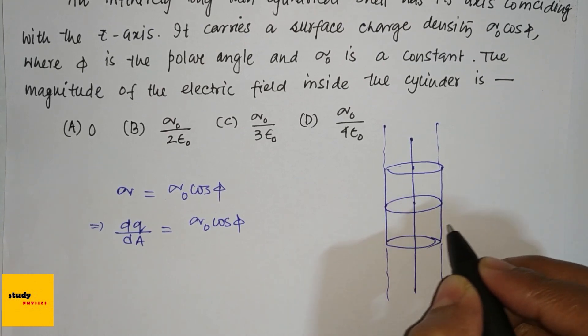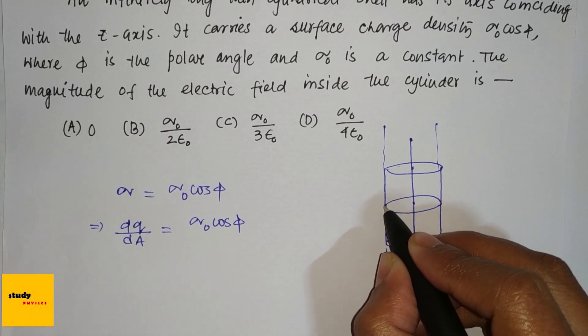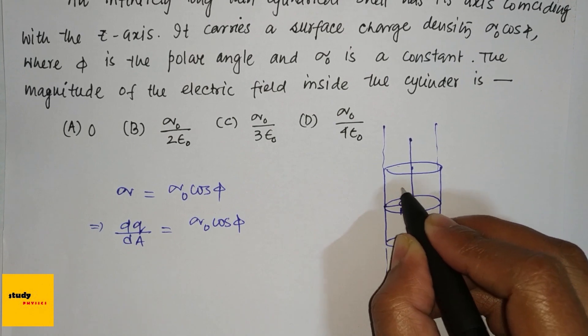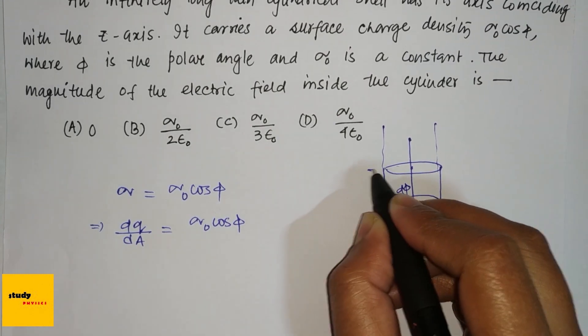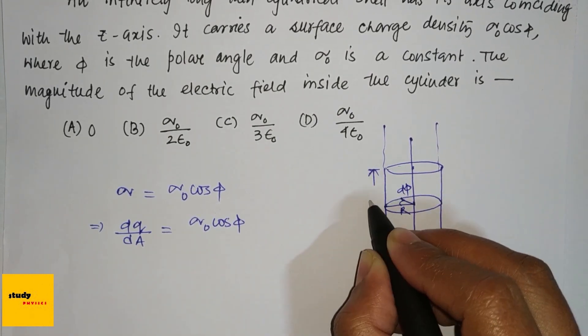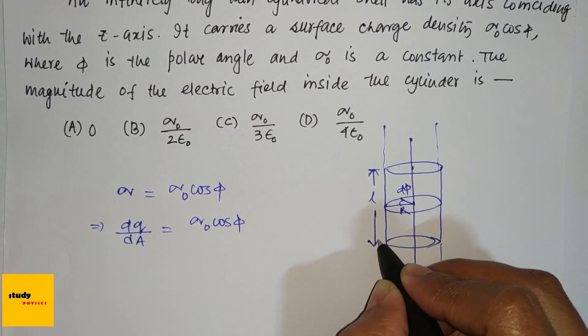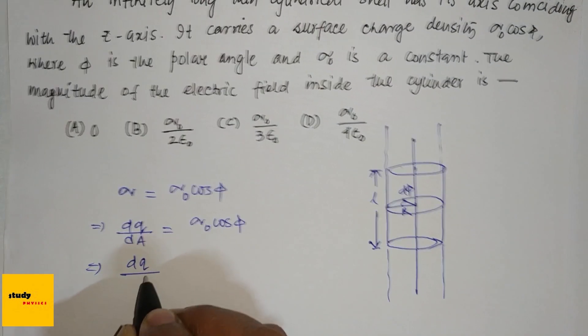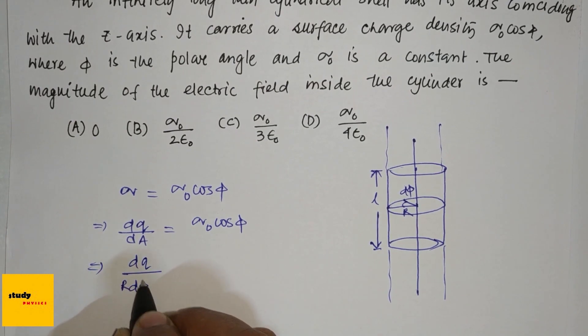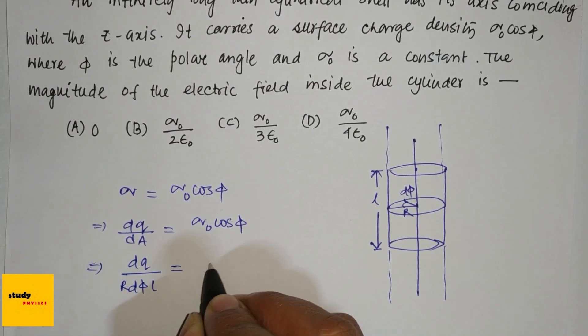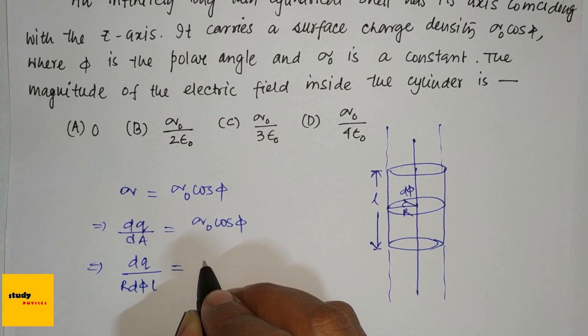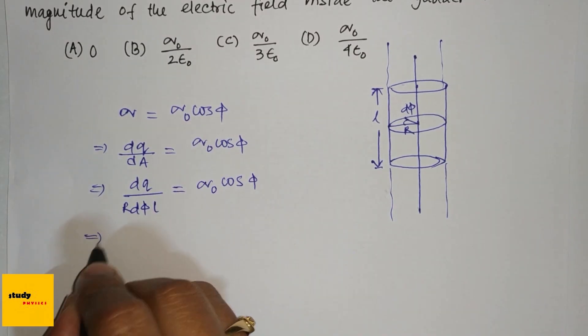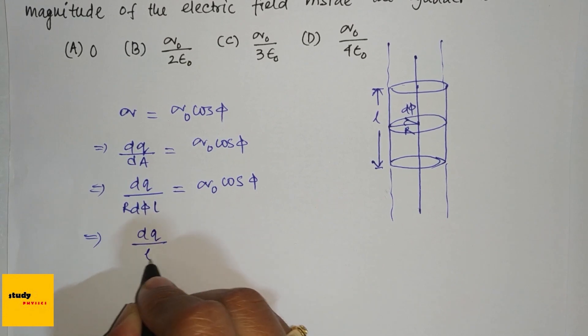And if its radius is r, here's the small angle d(phi), and the length of the cylinder is l, then the area will be r·d(phi)·l. So dq = sigma_0 cos(phi) · r·d(phi)·l.